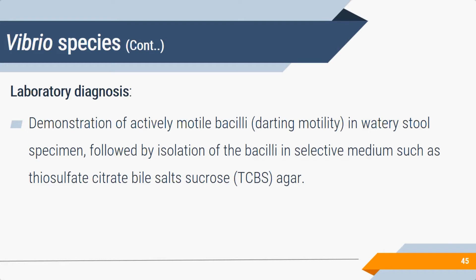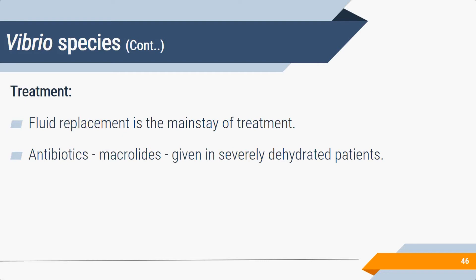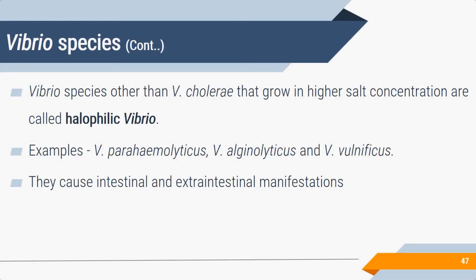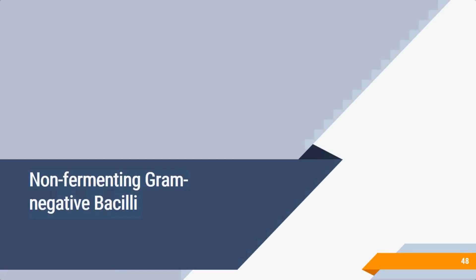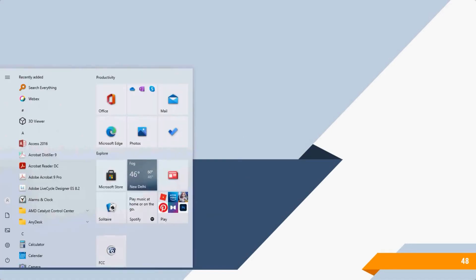Laboratory diagnosis of cholera involves stool culture and microscopy; hanging drop preparation directly shows darting motility due to the single polar flagellum, which makes V. cholerae the fastest-moving bacterium. Yellow globose colonies grow on TCBS medium. Halophilic Vibrio species — V. parahaemolyticus, V. alginolyticus, and V. vulnificus — are found in seawater and cause food poisoning or diarrhea after consumption of seafood, or wound infections after wound contamination with seawater.